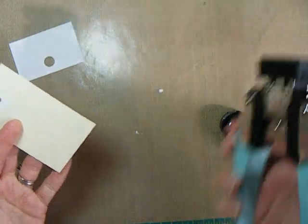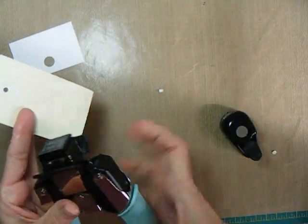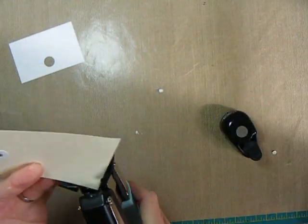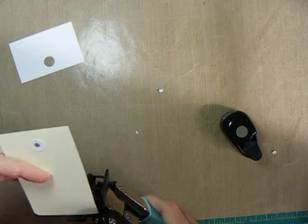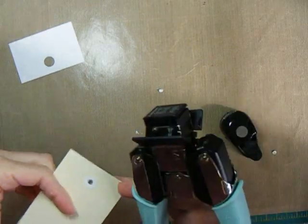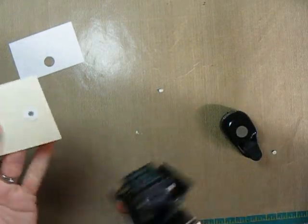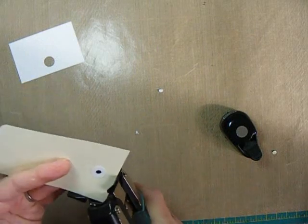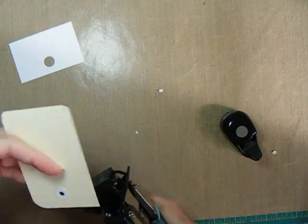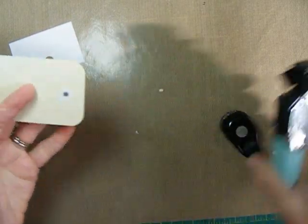And I'll use my corner rounder. I'm going to use the ¼ inch side for the small ends, the opposite end of where the circle is. And then on the end where the tie would go, I will use the ½ inch.